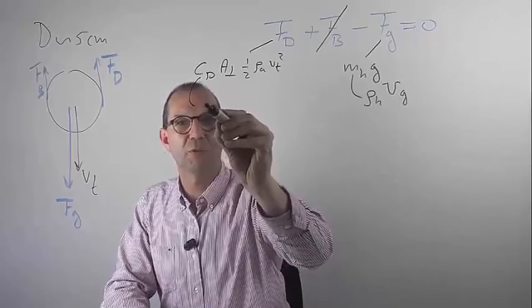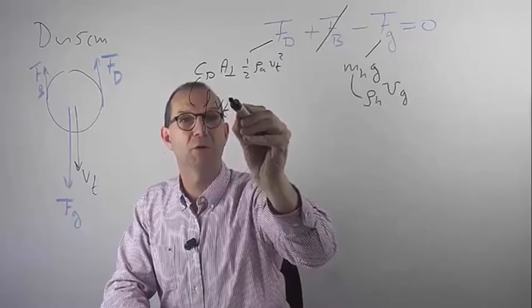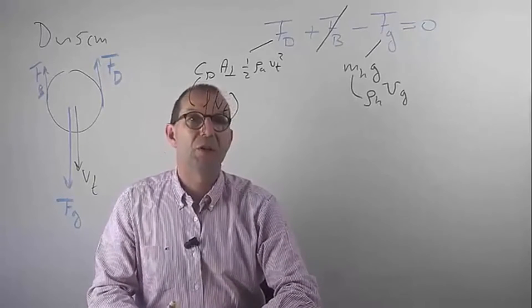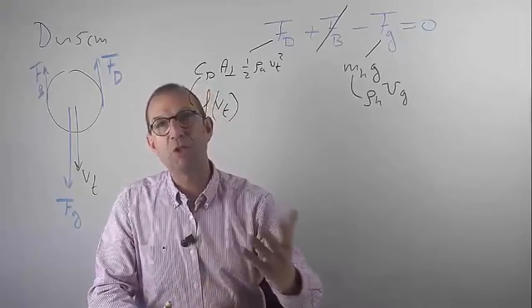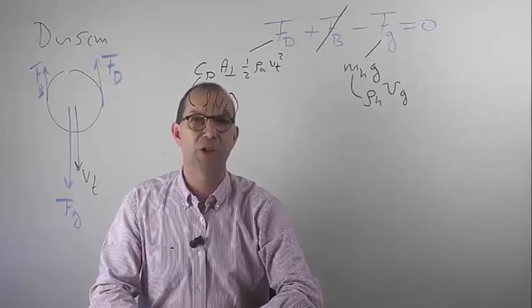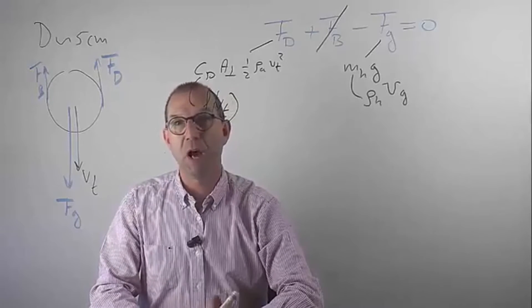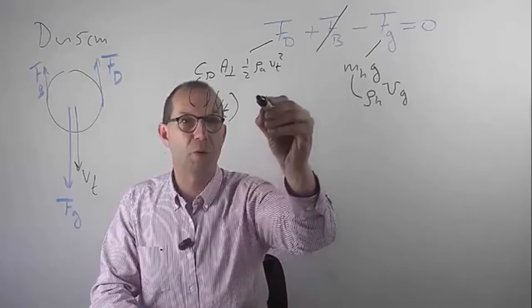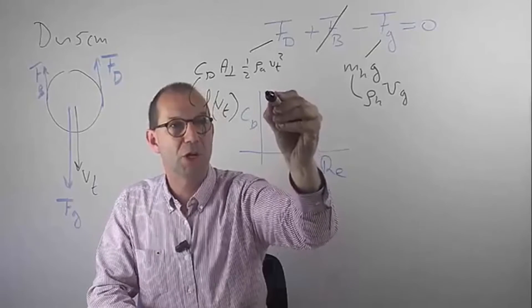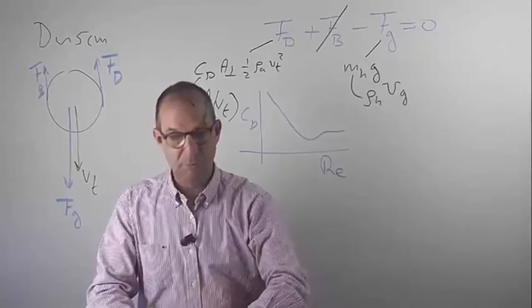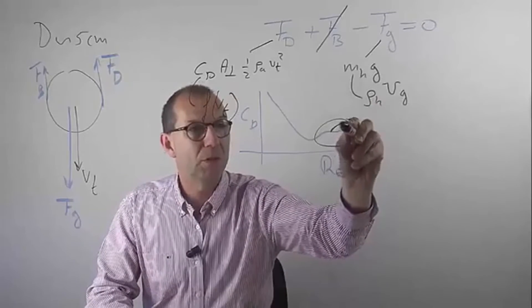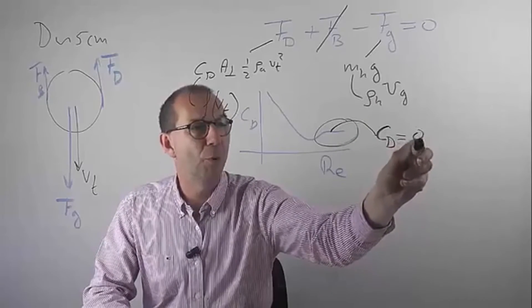The drag coefficient is a function of the Reynolds number and thus a function of the unknown terminal velocity. That creates a problem, which we can solve by iterative methods. But I'm going to use some a priori knowledge here: I know that this hailstone will come down at a reasonably high velocity, so I can anticipate that we are in a high Reynolds number regime. If I draw a log-log graph of Reynolds number versus drag coefficient, it looks something like this — I can assume I'm in this area, which means the drag coefficient is approximately 0.4. We will need to check that later, of course.